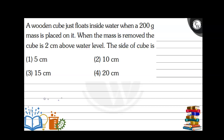Let's read the question first. A wooden cube just floats inside water when a 200 gram mass is placed on it. When the mass is removed, the cube is 2 cm above the water level. Find the side of the cube.